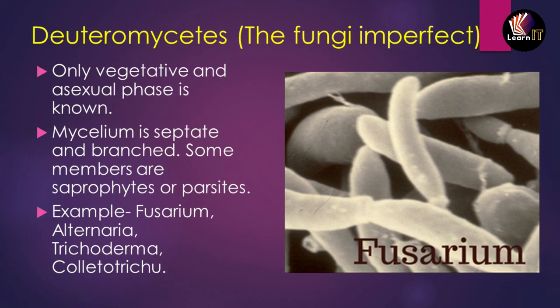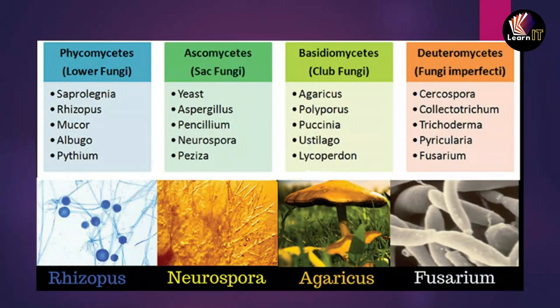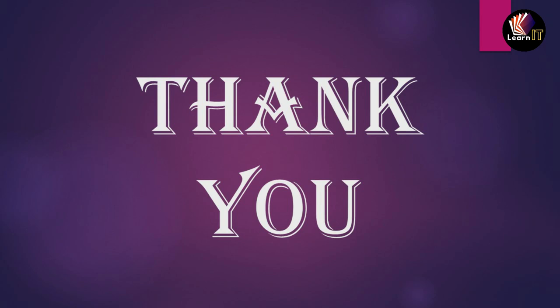The fourth type is Deuteromycetes, also known as fungi imperfecti. It only has vegetative and asexual phases known so far. They live as saprophytes or as parasites inside organisms. Examples include Fusarium, Alternaria, and Trichoderma. A summary slide covers all four types — Phycomycetes, Ascomycetes, Basidiomycetes, and Deuteromycetes — also known as lower fungi, sac fungi, club fungi, and fungi imperfecti respectively, with examples of each.